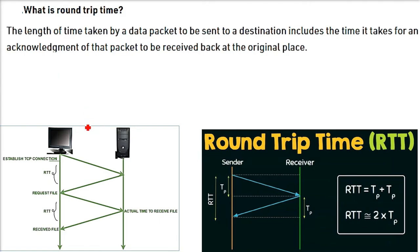It includes two times: the time it takes for an acknowledgment of the packet to be received back at the original place. You are sending and getting the acknowledgment, so the total time is called the round-trip time.